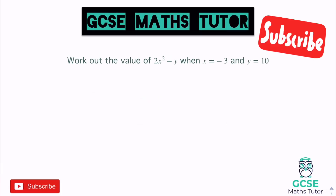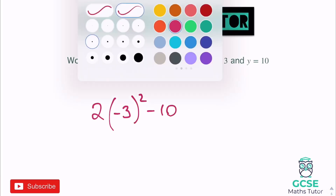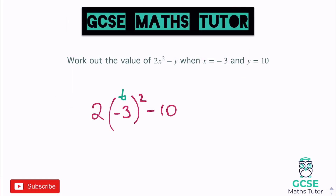Now we have squares: work out the value of 2x² − y. This is where brackets really come into their own. When we substitute x = negative 3, it's very important — especially on a calculator — to put it in brackets. So we have 2 lots of (negative 3) squared, take away y which is 10. First, work out what's in the bracket: negative 3 squared means negative 3 multiplied by negative 3, and a negative times a negative makes it positive, so the answer is 9.